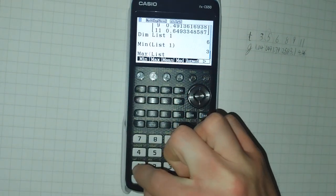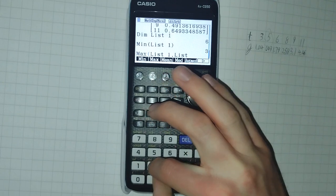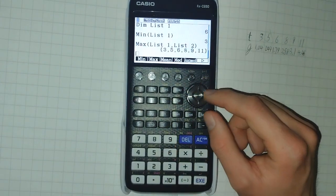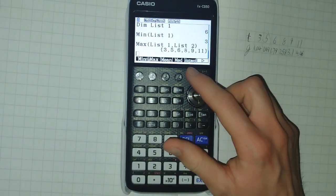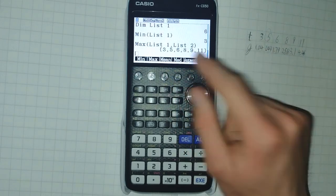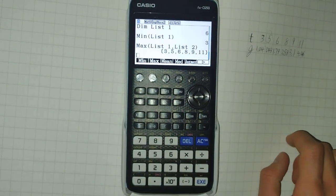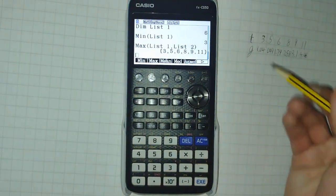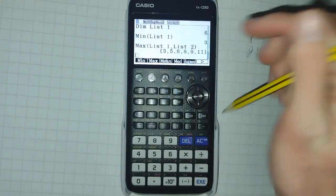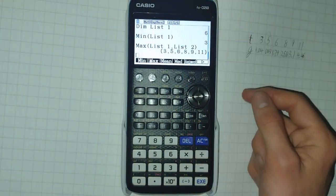And max does exactly the same thing. However, I would like to point out that you can specify multiple lists. And it will get you the maximum list. So, list one is always bigger than list two. So it's giving me that on the bigger list.